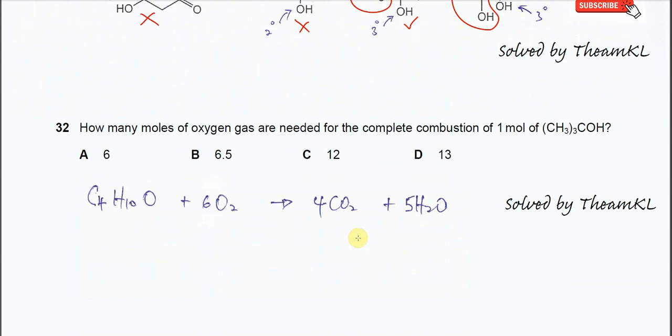Okay, next question 32. This is the easiest question in this paper. How many moles of oxygen gas are needed for the complete combustion of one mole of this tertiary alcohol? So this is the 2-methyl propane-2-ol. So this tertiary alcohol, if you want to construct an equation, you can just use the molecular formula. It's faster.